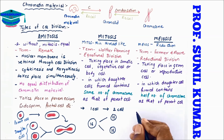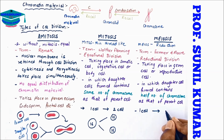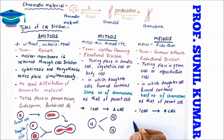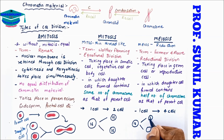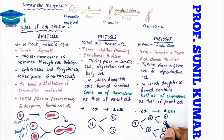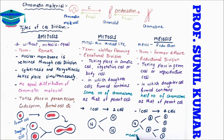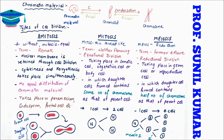In meiosis, the chromosome number becomes exactly half. From one cell we always get four cells. So if the parent cell has 16 chromosomes, the daughter cells will each have 8. Meiosis includes meiosis 1 and meiosis 2.